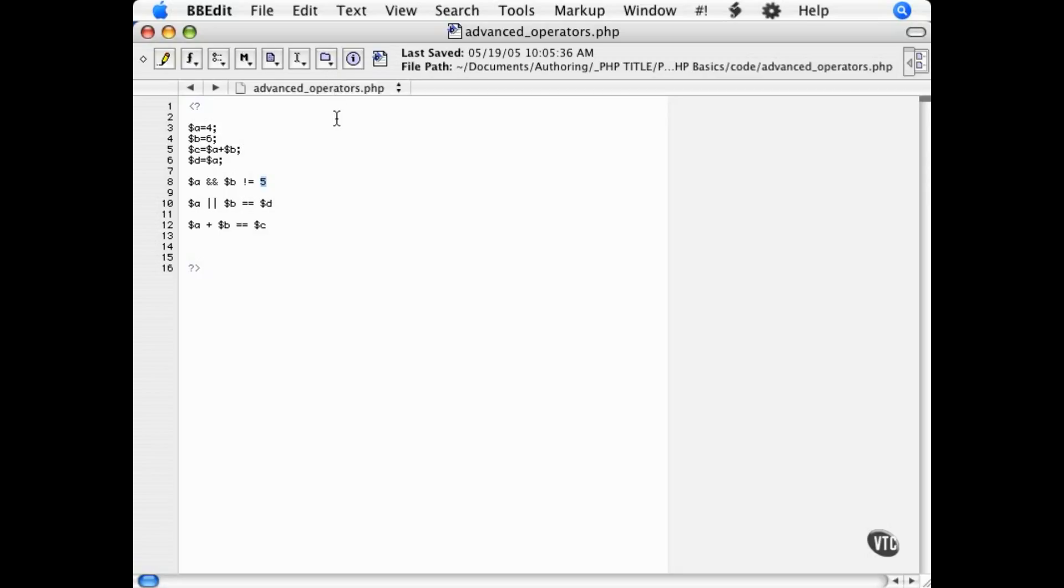To translate these lines into English, we first have to assume that it is a decision, and as such, use the word if. Remember that the variables will be replaced with their actual values in the statement. So, we are actually evaluating if 4 and 6 are not equal to 5. This statement is true, because 4 and 6 are not equal to 5.